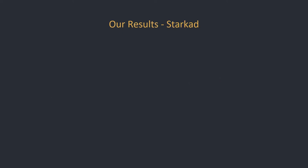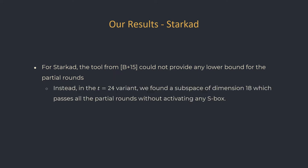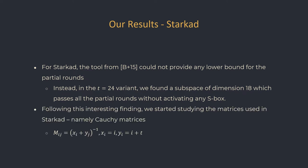When we started analyzing Starkad, we tried to use the exact same method we used for Poseidon and get a lower bound using the automatic tool. We were very surprised to see that the tool could not provide any lower bound. Instead, for the variant with 24 blocks, we found a subspace of dimension 18 which does not activate any S-boxes in the whole middle layer. As it turns out, this subspace is an invariant subspace — differences that start in the subspace will always stay in the subspace, and will never activate any S-boxes regardless of how many partial rounds there are.